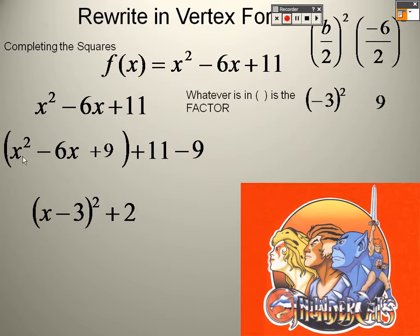So the factors for this will be x minus 3 and x minus 3. Well, x minus 3 times x minus 3 is x minus 3 squared. And that's how you get your vertex form for the problem.